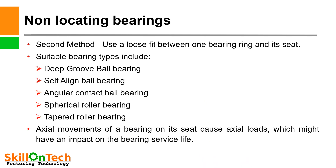Non-locating bearings — the second method: use a loose fit between one bearing ring and its seat. By keeping a loose fit, it provides space for axial displacement. Suitable bearing types include deep groove ball bearings, self-aligning ball bearings, angular contact ball bearings, spherical roller bearings, and tapered roller bearings. Note that axial movement of a bearing on its seat can cause axial loads which might impact bearing service life. If axial displacement clearance is not provided within the bearing, the axial load will impact the bearing and cause it to fail.